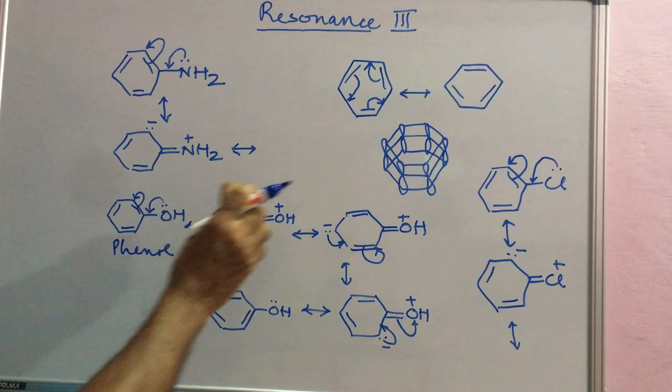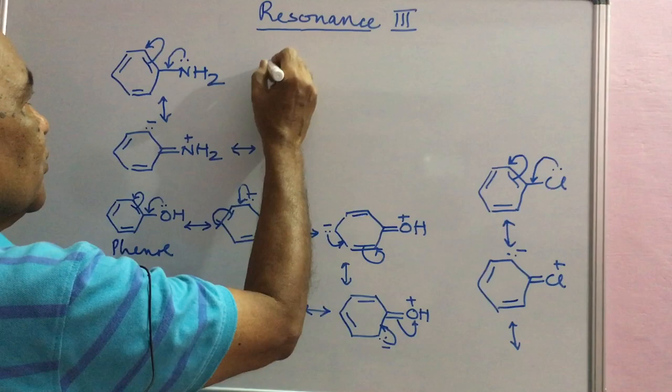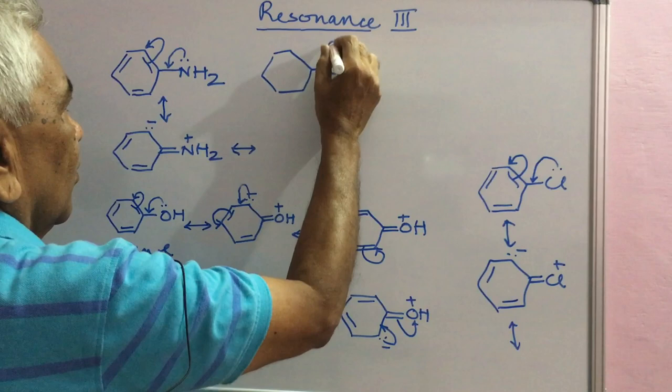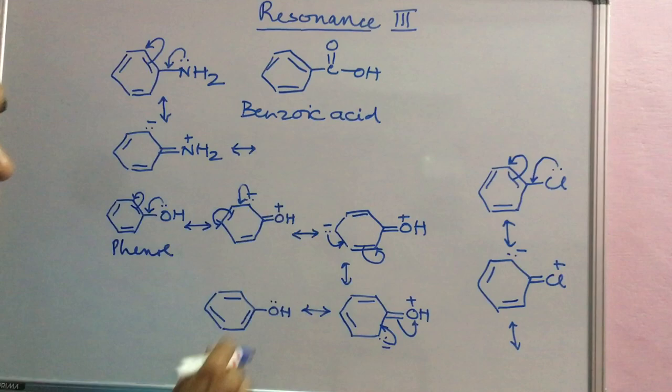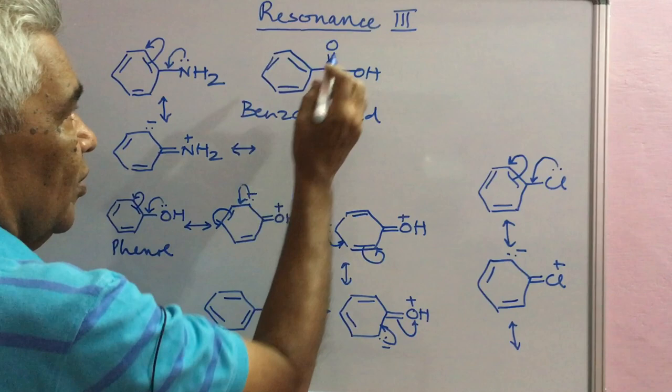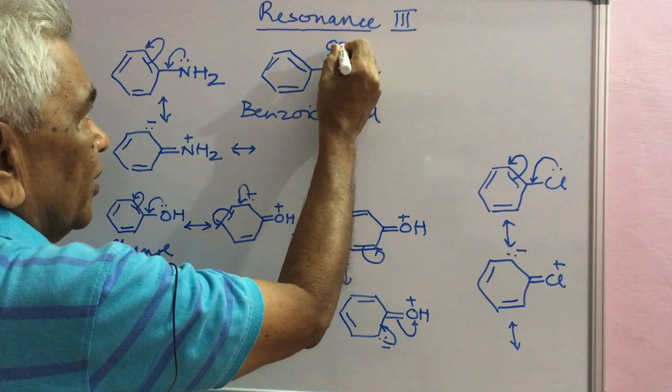Let us take the case of benzoic acid. In benzoic acid, you have this situation. Double bonds. Single bond. Double bond. Conjugated double bonds. They are all sp2 hybridized. One movement like this. And one like this.